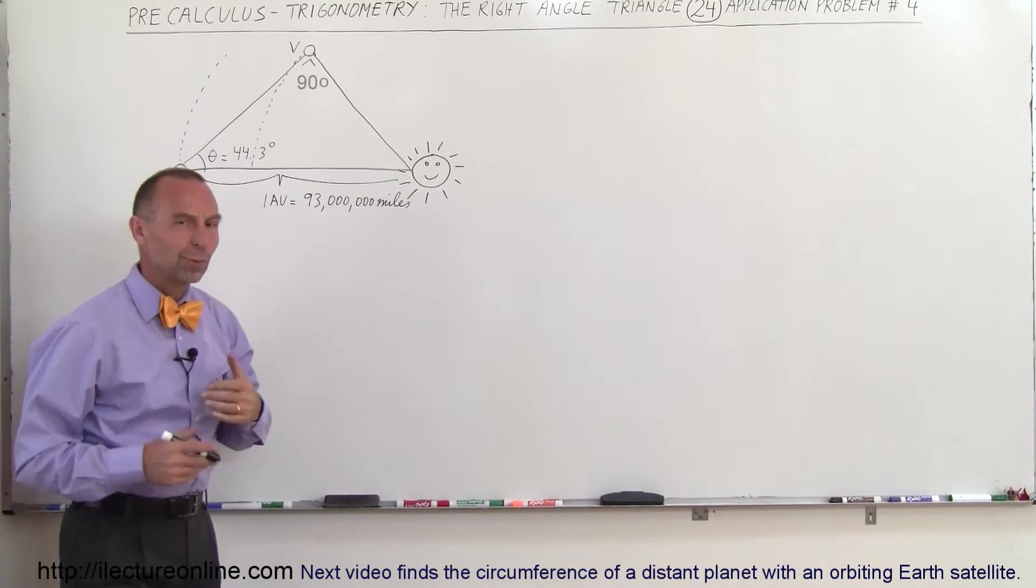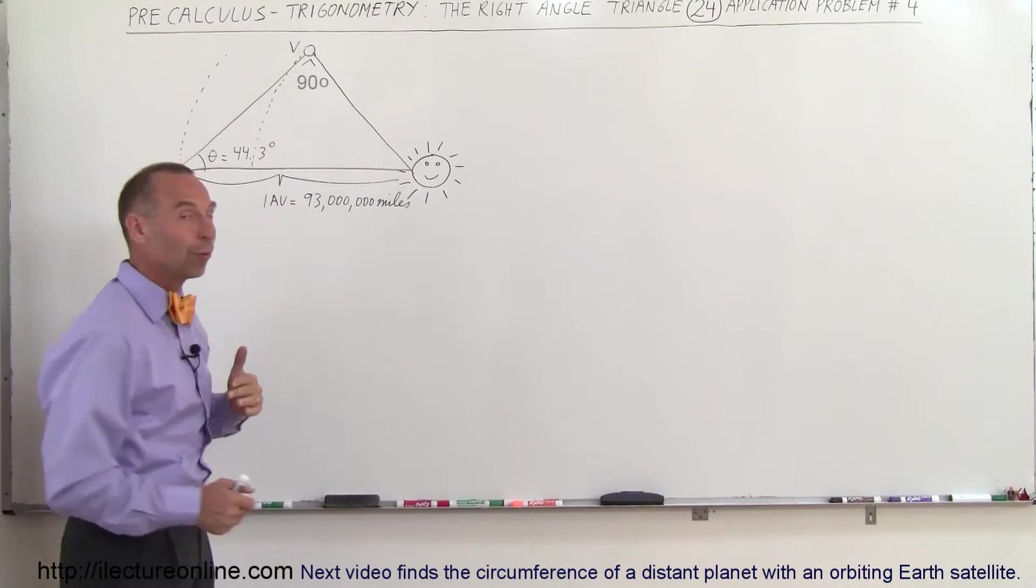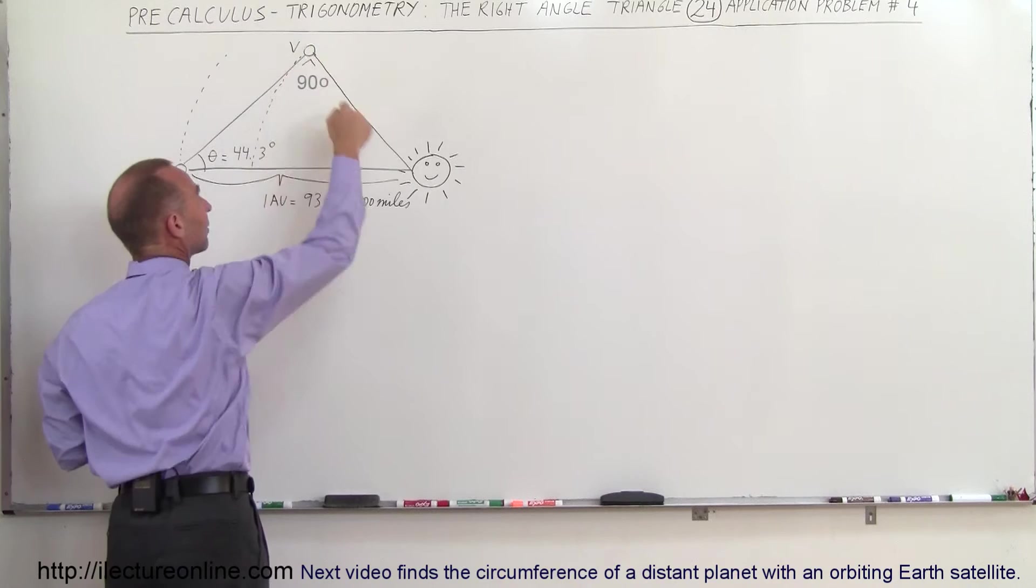We measure the angle between the line going directly from the earth to the Sun to the line going from the earth to Venus and we notice that that angle is 44.3 degrees. Also at that moment, the angle from that line to this line and that line to this line is exactly 90 degrees, so we have ourselves a right angle triangle.